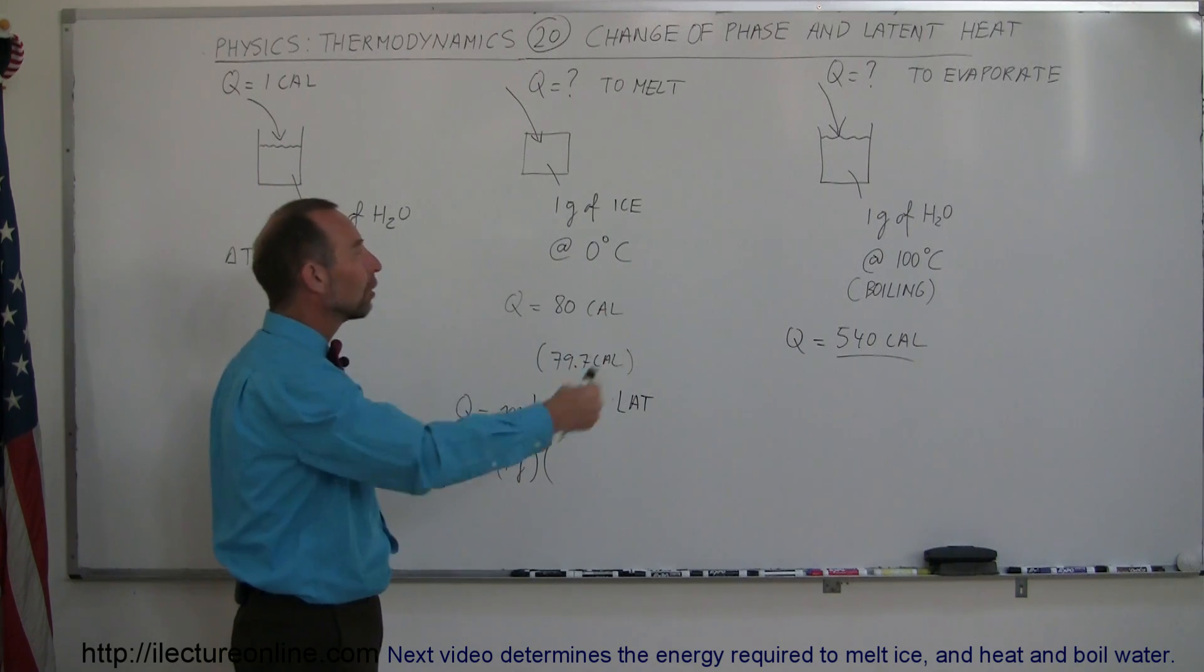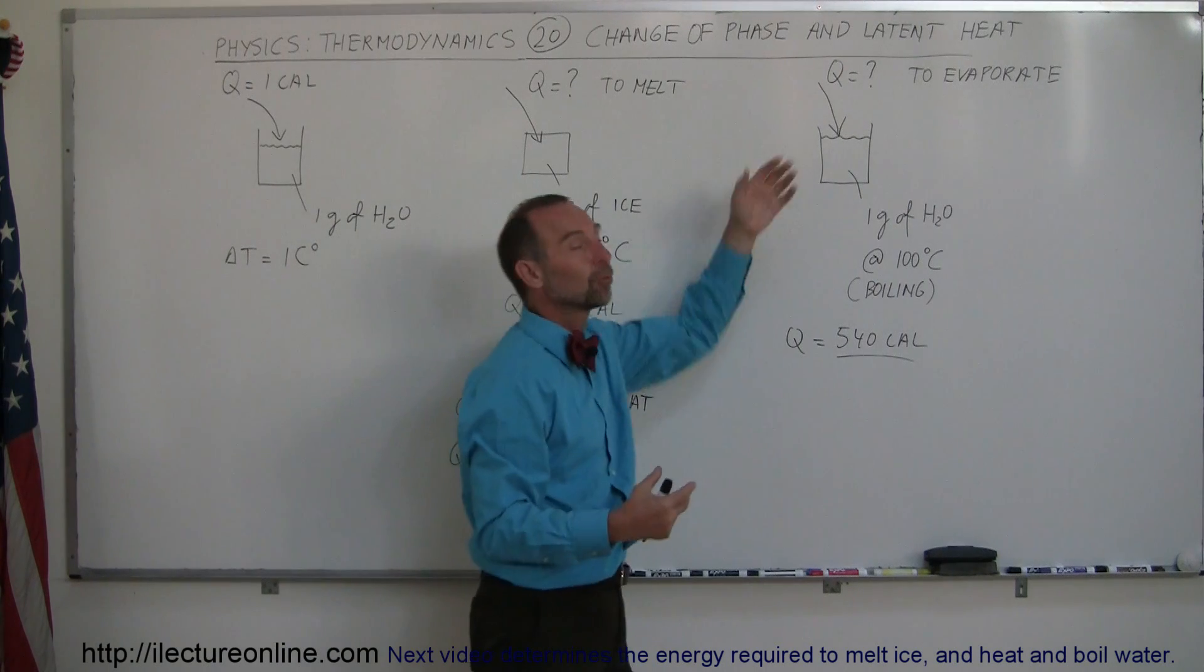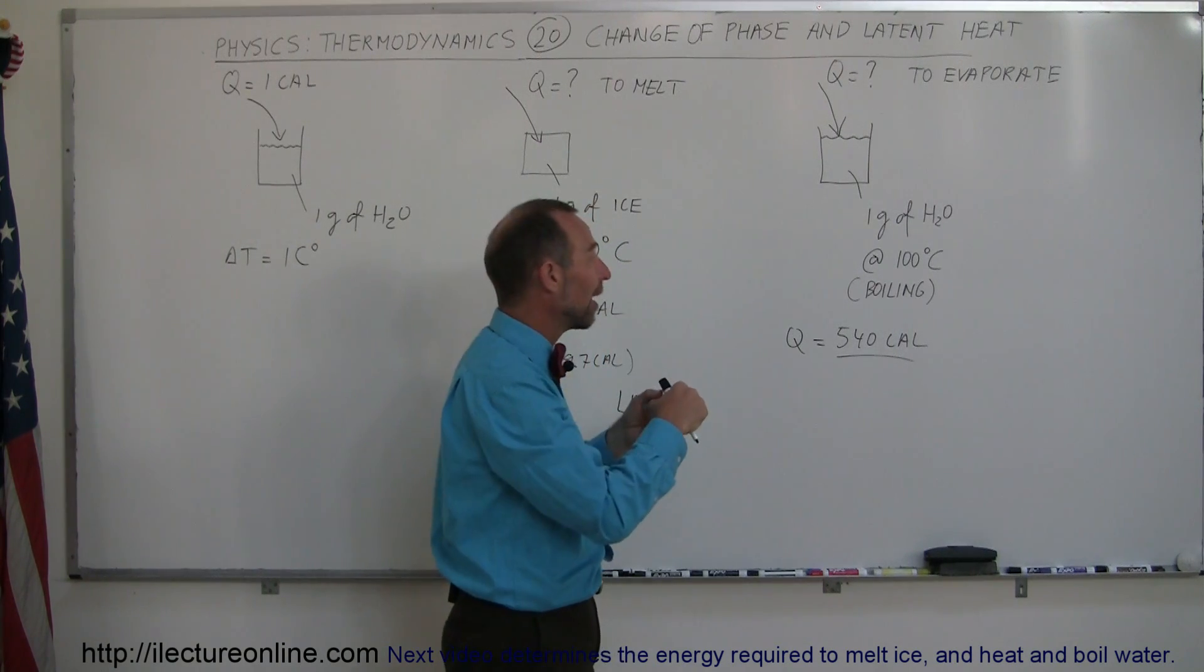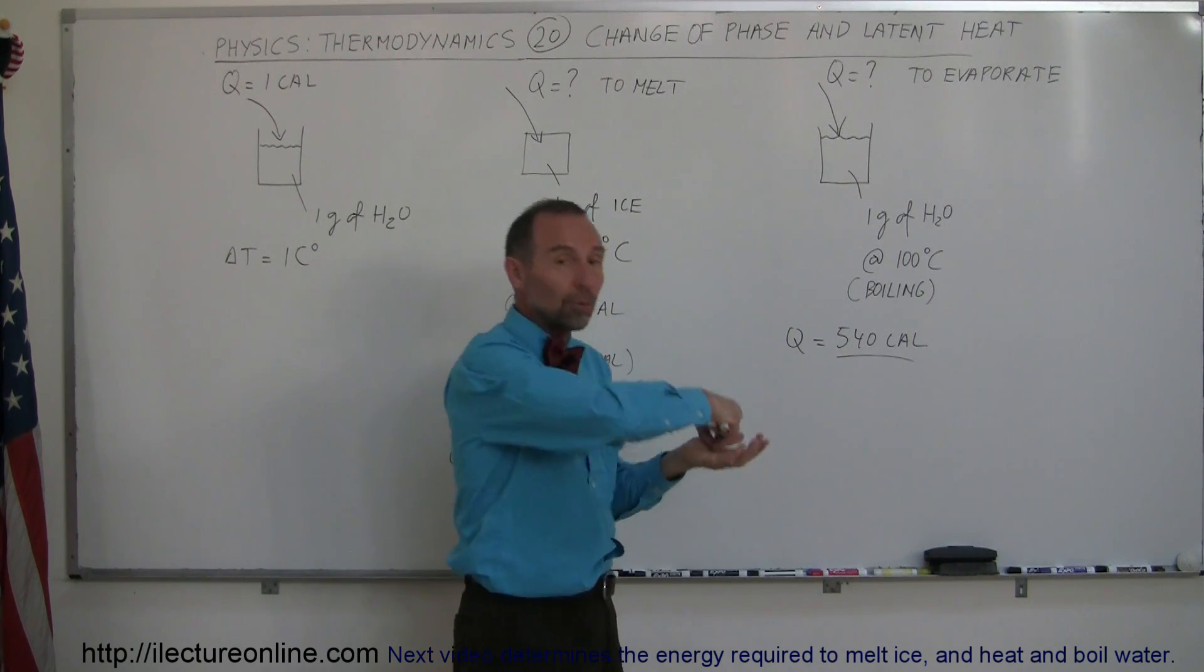Likewise, if you have one gram of steam at 100 degrees centigrade and allow it to liquefy or condense, you have to remove 540 calories of heat for it to go from gas phase to liquid phase.